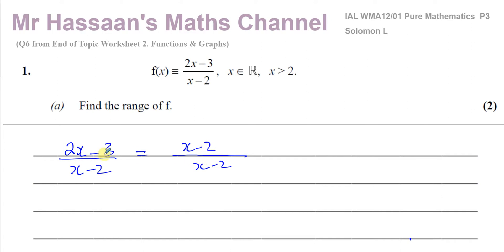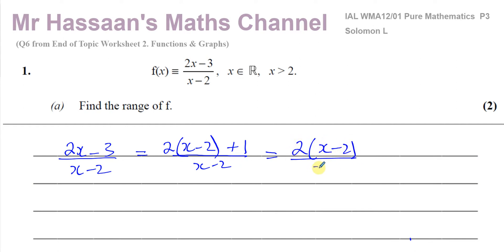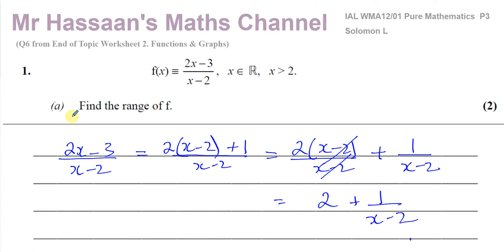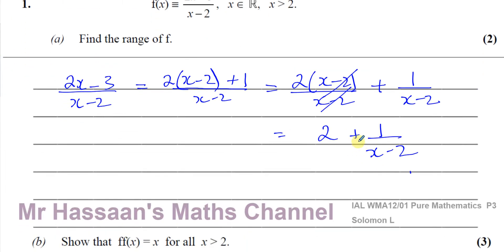I need to have 2x, so I multiply (x − 2) by 2, giving 2x − 4. I need 2x − 3, so I add 1: that gives 2x − 4 + 1 = 2x − 3. These are the same. I can now split this into two separate fractions: (2(x − 2))/(x − 2) plus 1/(x − 2). The (x − 2) terms cancel, leaving 2 + 1/(x − 2). Now we have a mixed number — easy to sketch and determine the range.